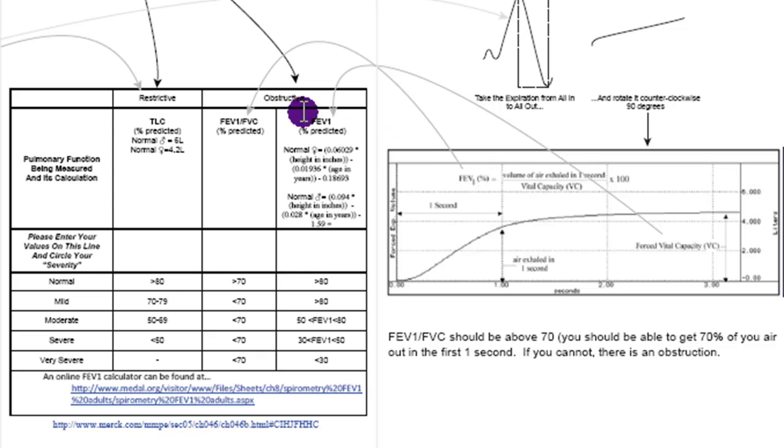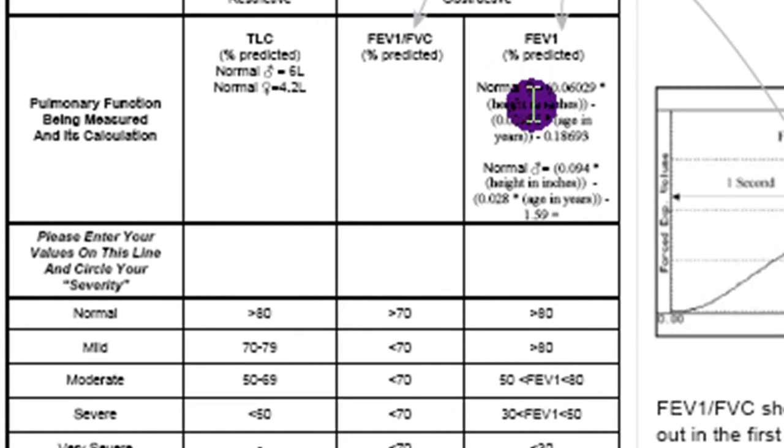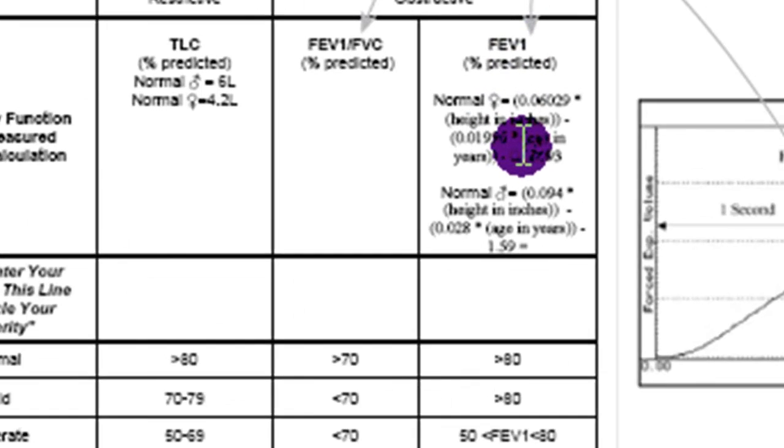So I talked about two values there. There's the FEV1. FEV1 can be measured as a percent predicted. And so there's a calculation based on your height and your sex, whether you're male or female, what FEV1 should be. And so what you'll do is you'll take your FEV1 and divide by the predicted value, and you'll get that predicted value by using this equation.